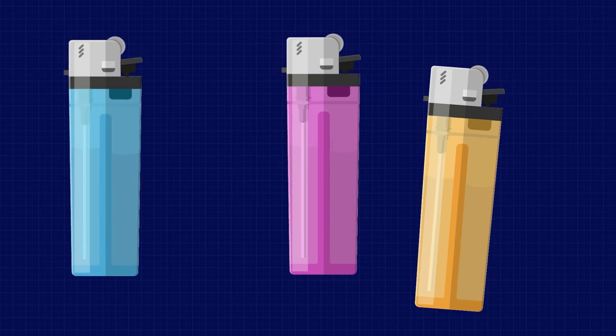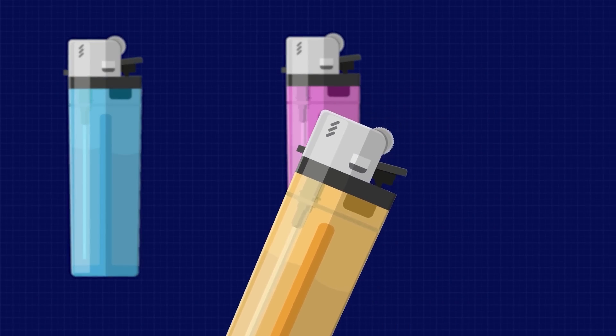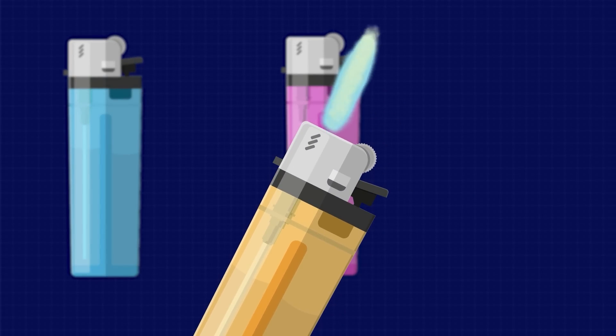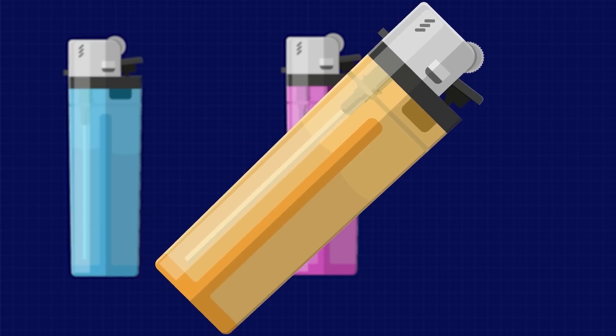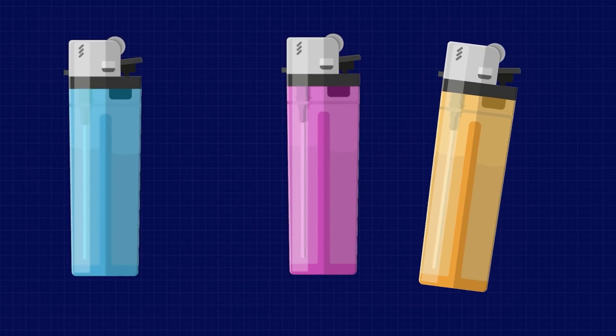I mean with butane you barely need any containment at all because at normal temperatures its vapour pressure is only around 2 bar so you can even contain it within a plastic lighter case. Who'd have thought that the humble cigarette lighter would use the same physics as billion dollar gas carriers.